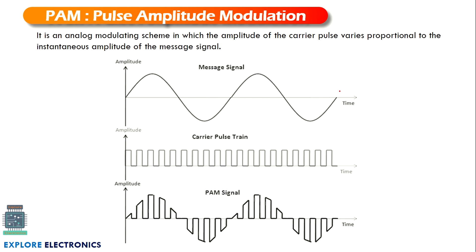PAM is pulse amplitude modulation. You can see here in this waveform: this is a message signal, also called a modulating signal. This will be called the carrier signal — since it is a pulse, here the carrier wave is a pulse. It is called a carrier pulse train because continuous values are present as long as the modulating signal exists.